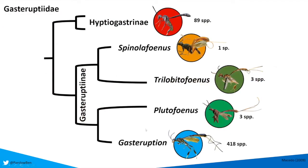We run into a few tricky problems when we start to look at the phylogenetics of the group. This is a stylized phylogeny based on the only real phylogeny with any resolution, done by Macedo in 2009 based on morphological characters. At the top we have the sister subfamily, the Hyptiogastrinae with 89 species. Then within the Gasteruptiinae, we have four genera: Spinolaphrus with one species, Trilobaphrus with three species, Plutofoenus also with three species, and then the largest genus, Gasteruption, with about 418 described species.